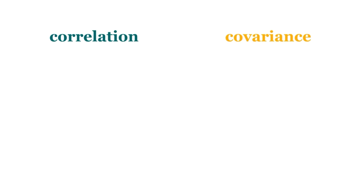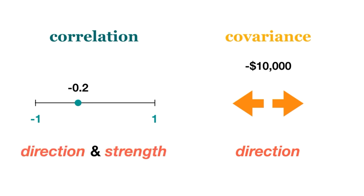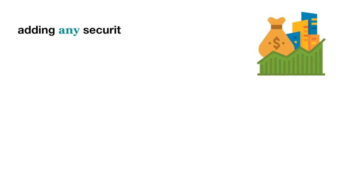When we talk about the relationship between two securities, we prefer to use correlation over covariance. Correlation must always be between negative 1 and 1, making it easier to interpret. If we have a covariance of, say, negative 10,000, all we know is that the securities tend to move in opposite directions. But if we know that the correlation is negative 0.2, we can also see that the strength of this relationship is low. But assets don't need to be negatively correlated in order to have risk reduction benefits.